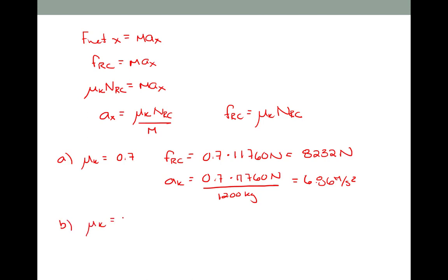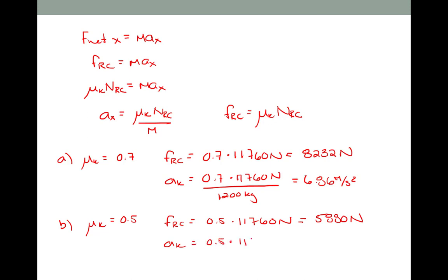For Part B, the coefficient of kinetic friction was 0.5 from the table. Doing the exact same thing, the force of friction is 0.5 times 11,760 newtons, which is 5,880 newtons. The acceleration is 0.5 times 11,760 newtons divided by 1,200 kilograms, which works out to be 4.9 meters per second squared.